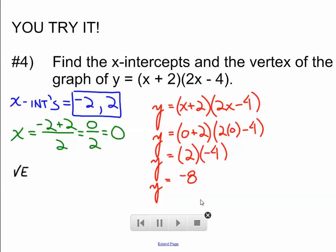So, our vertex is the point 0, negative 8. So, between the vertex and the x-intercept, we've got three points where we can make a very rough sketch of this parabola.